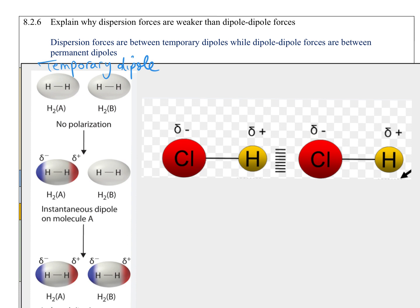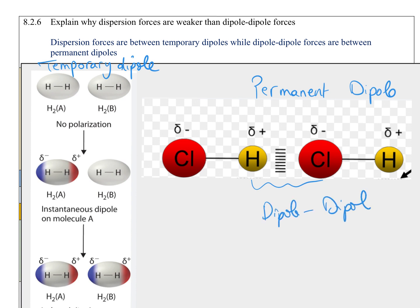Looking at the other side, we can see a permanent dipole, because it's made up of a polar molecule — HCl — where there is a big difference in electronegativity between hydrogen and Cl, unlike H2 which had only two hydrogen atoms. This creates a dipole on each molecule. The attraction between two such polar molecules is dipole-dipole, and it is a permanent dipole because we always see delta minus on Cl and delta plus on hydrogen.